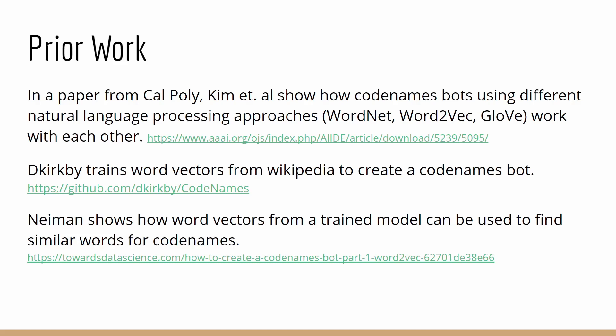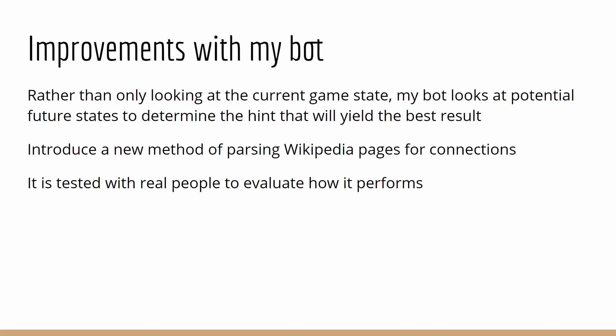For prior work, people have done this in the past and created bots to try to solve this. Most notably, in a paper from Cal Poly University, they tried to make Codenames bots with different natural language processing approaches: WordNet, Word2Vec, and GloVe, and tested how well they work with each other. There are also two others who used Word2Vec models to create Codenames bots. The improvements with my bot over these past ones is that instead of only looking at the current game state, my bot looks at potential future states to determine the hint that will yield the best result. I also introduced a new method of parsing Wikipedia pages for connections, and I tested mine with real people to see how well mine works with real human operatives.